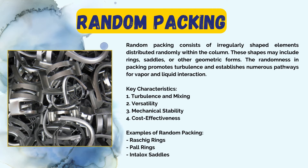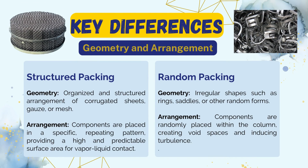Now let's look at the key differences between structured and random packed distillation columns. The first key difference is geometry and arrangement. In structured packing, there is an organized arrangement of corrugated sheets, gauze, or mesh placed in a specific repeating pattern, providing a high and predictable surface area for vapor-liquid contact. In random packing, the components have irregular shapes such as rings and saddles, and are randomly placed within the column, creating void spaces and inducing turbulence.